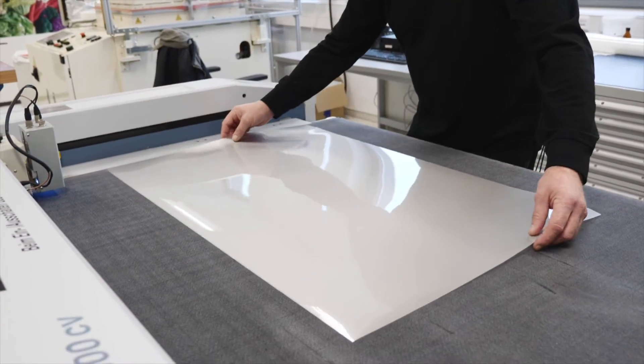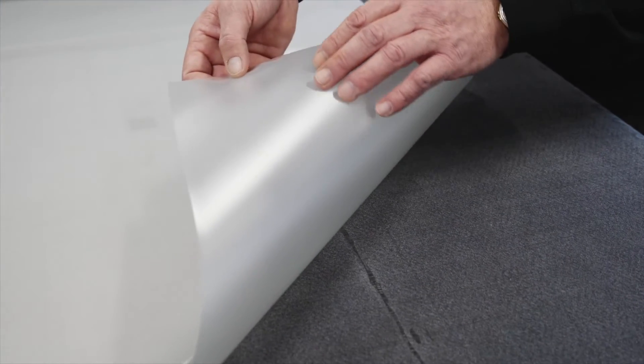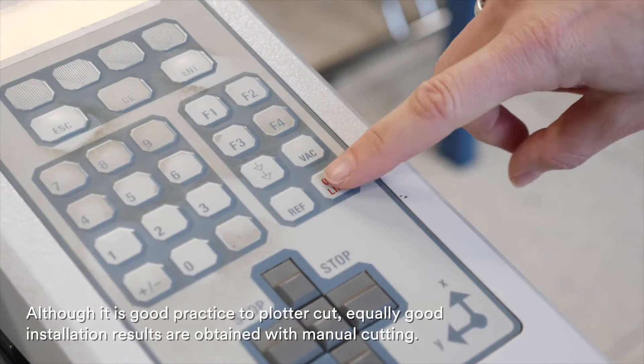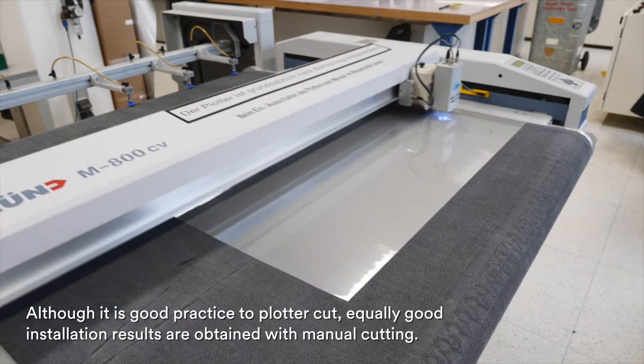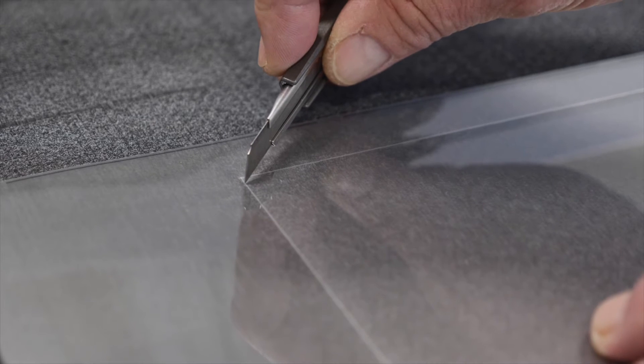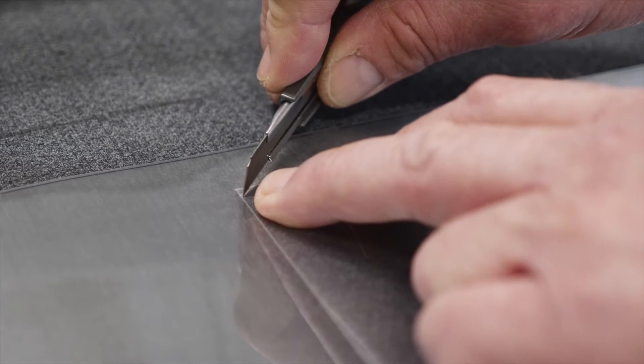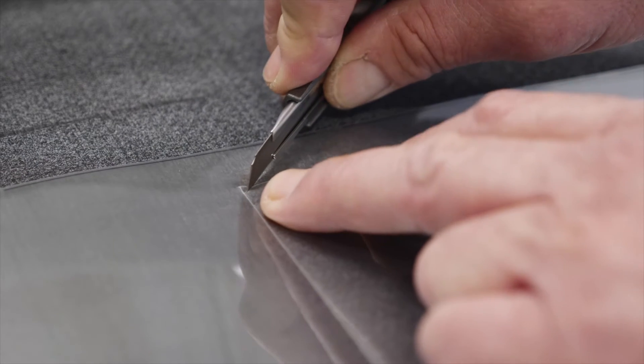Transfer the film to a plotter and program in the exact dimensions. Ensure the liner side is facing upwards. Once the film is cut to size, create a small notch in the top left-hand corner on the edge with the black line. This is to maintain correct orientation when the liner has been removed.